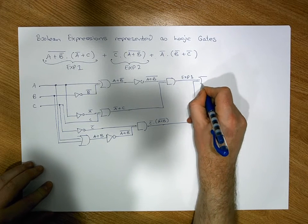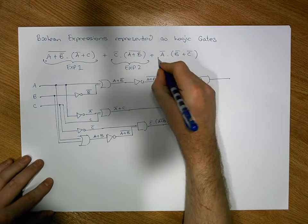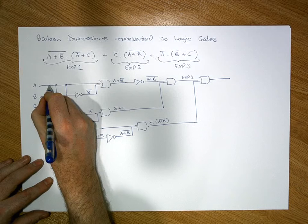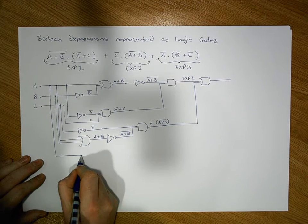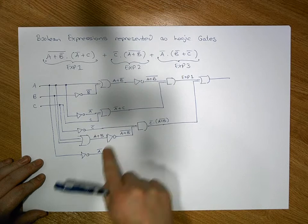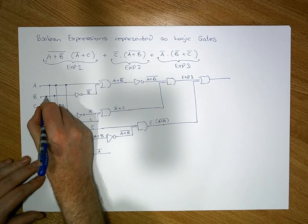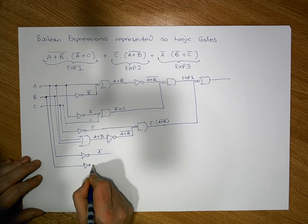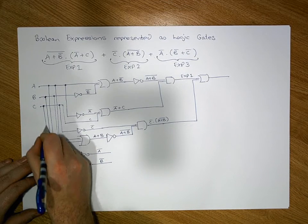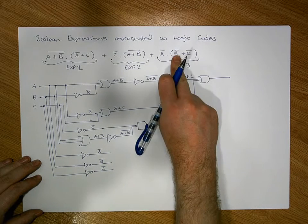Now concentrating on Expression 3: before we can do the AND we need an A-bar, so we pass the A signal into an inverter to get A-bar. The right operand is B-bar OR C-bar, so we need B-bar first — we pass B into an inverter to get B-bar. We also need C-bar, so we pass the C signal into another inverter to get C-bar.